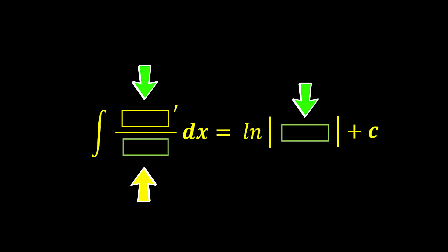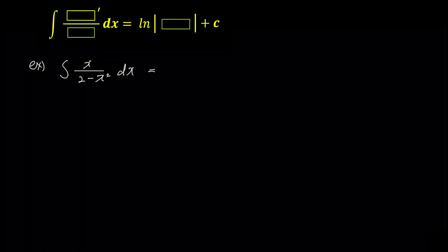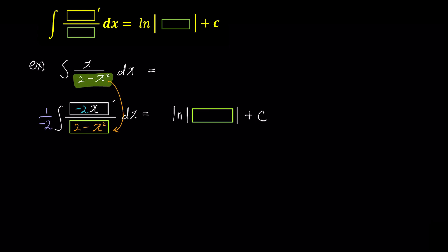The first example is simple. Since the problem has a fraction, we check if the derivative of the denominator matches the numerator. The derivative of the denominator is negative 2x, but the numerator only has x. Even though they differ by a factor of negative 2, the constant factor is not a problem. We put 2 minus x squared in the green box and negative 2x, which is the derivative of the green box, in the numerator. However, we cannot simply multiply by negative 2, so we divide by negative 2 in front of the integration.